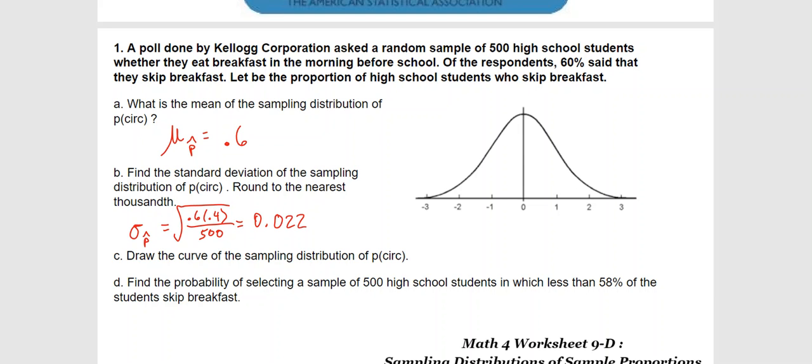We get, to the nearest thousandth, three decimal places: 0.022. Now if we're going to do this on a curve, we're going to have 0.600, and we're going to add 22 every time - 644, 666.